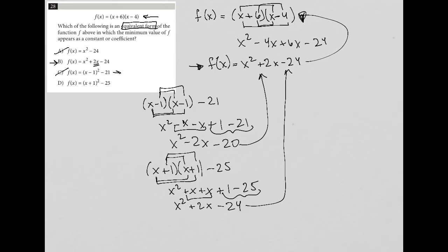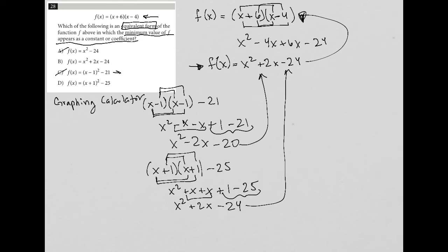The other component of this question asks for the form in which the minimum value of f appears as a constant or coefficient. Is there something about choice B that tells me the minimum value of this function? We could use a graphing calculator — and you could have done this from the very beginning, which would have saved a lot of time.